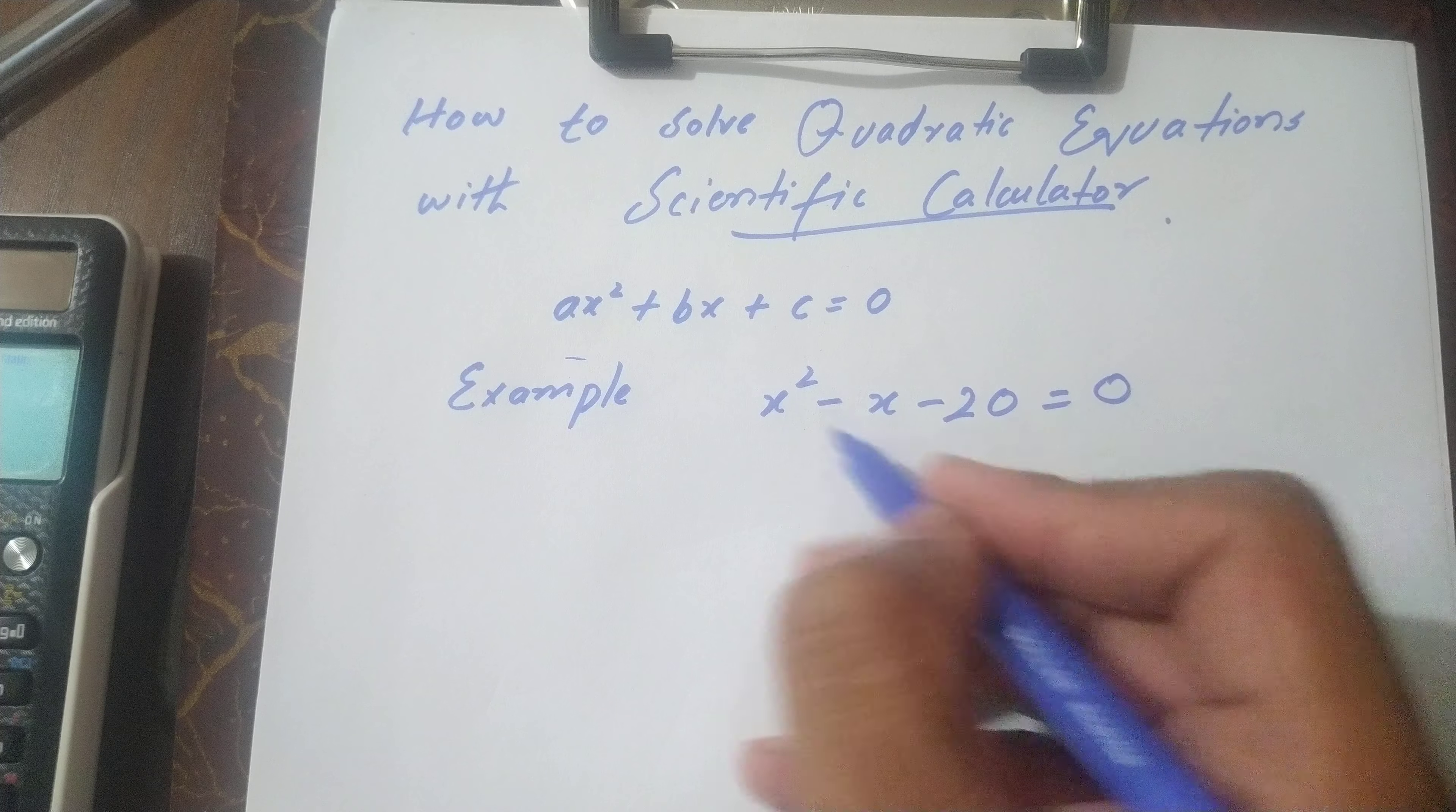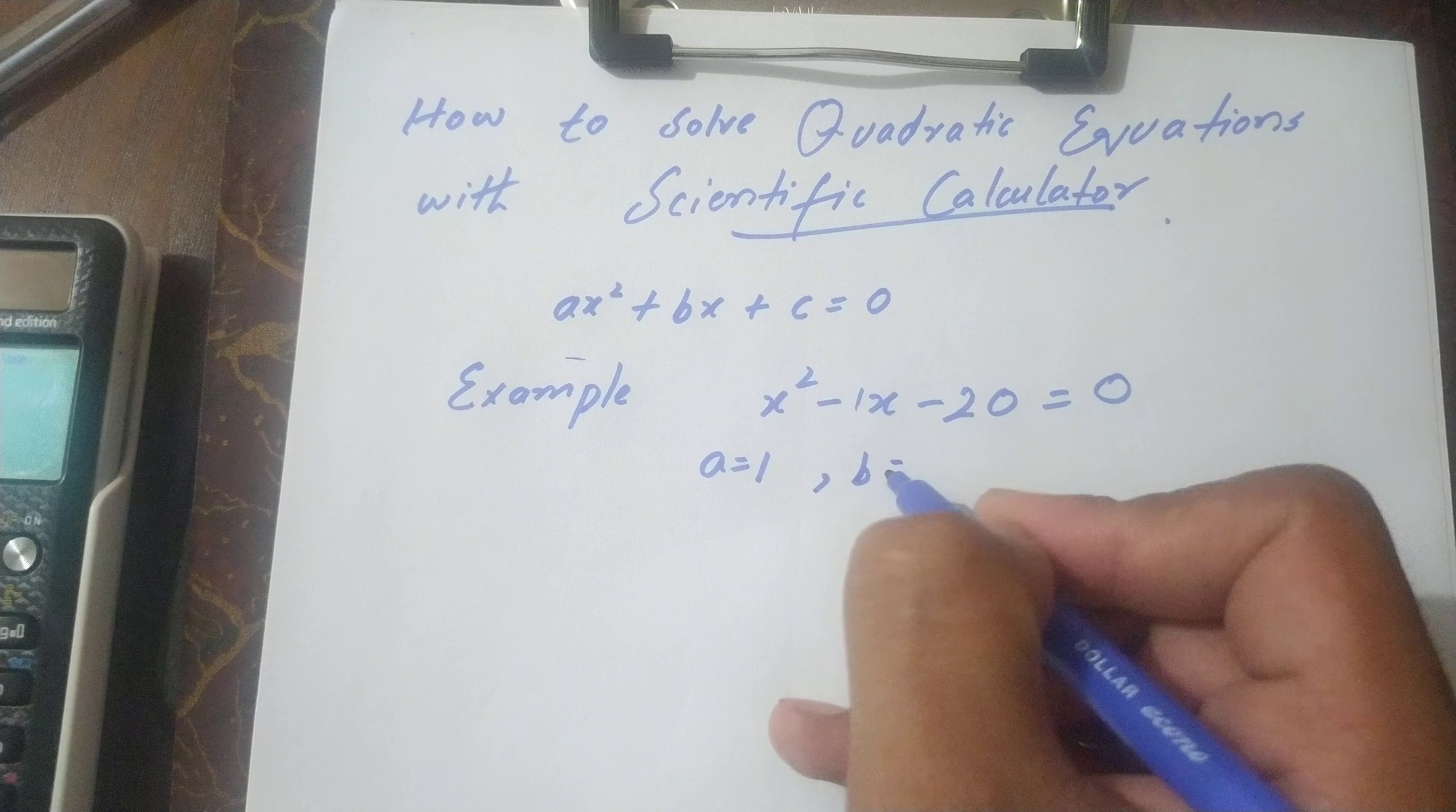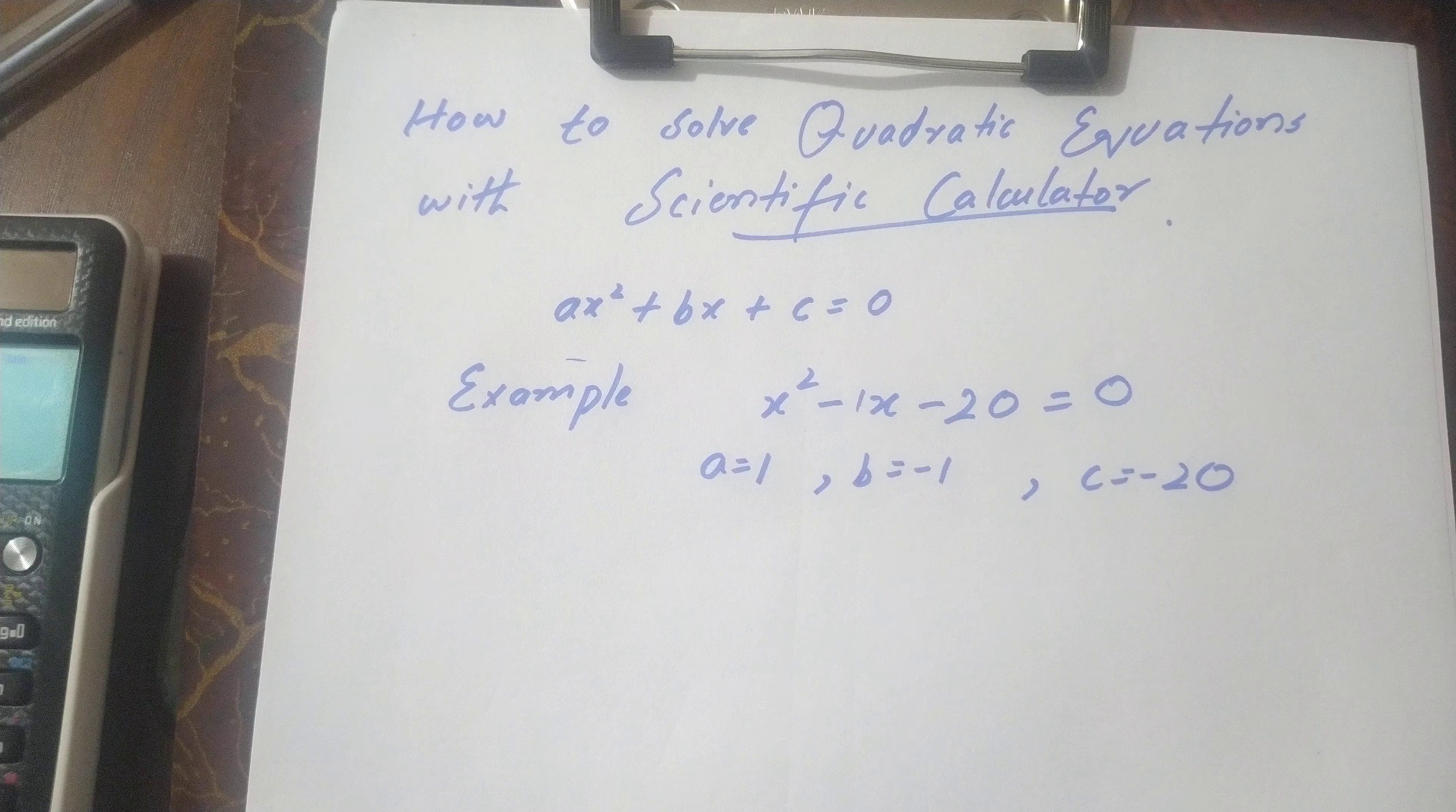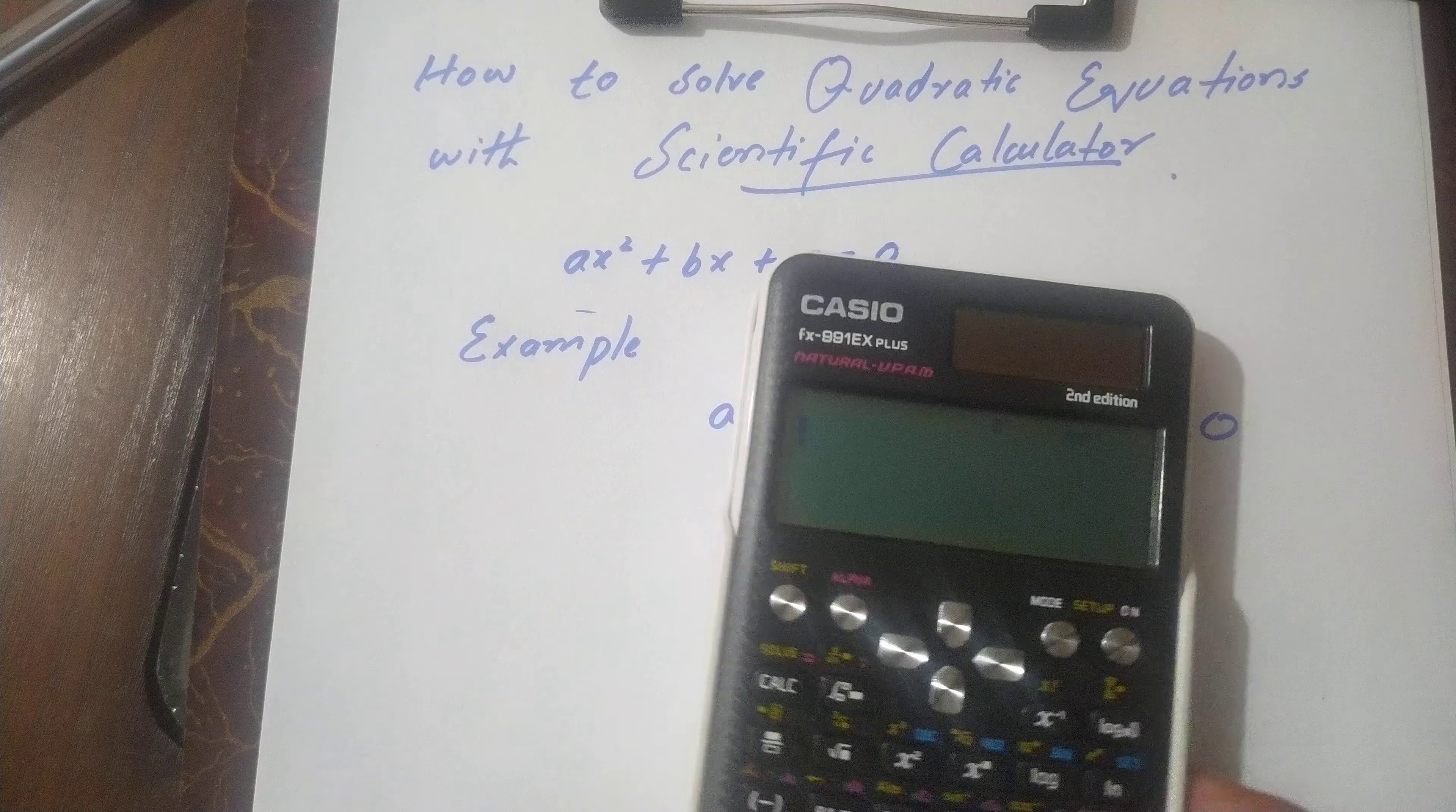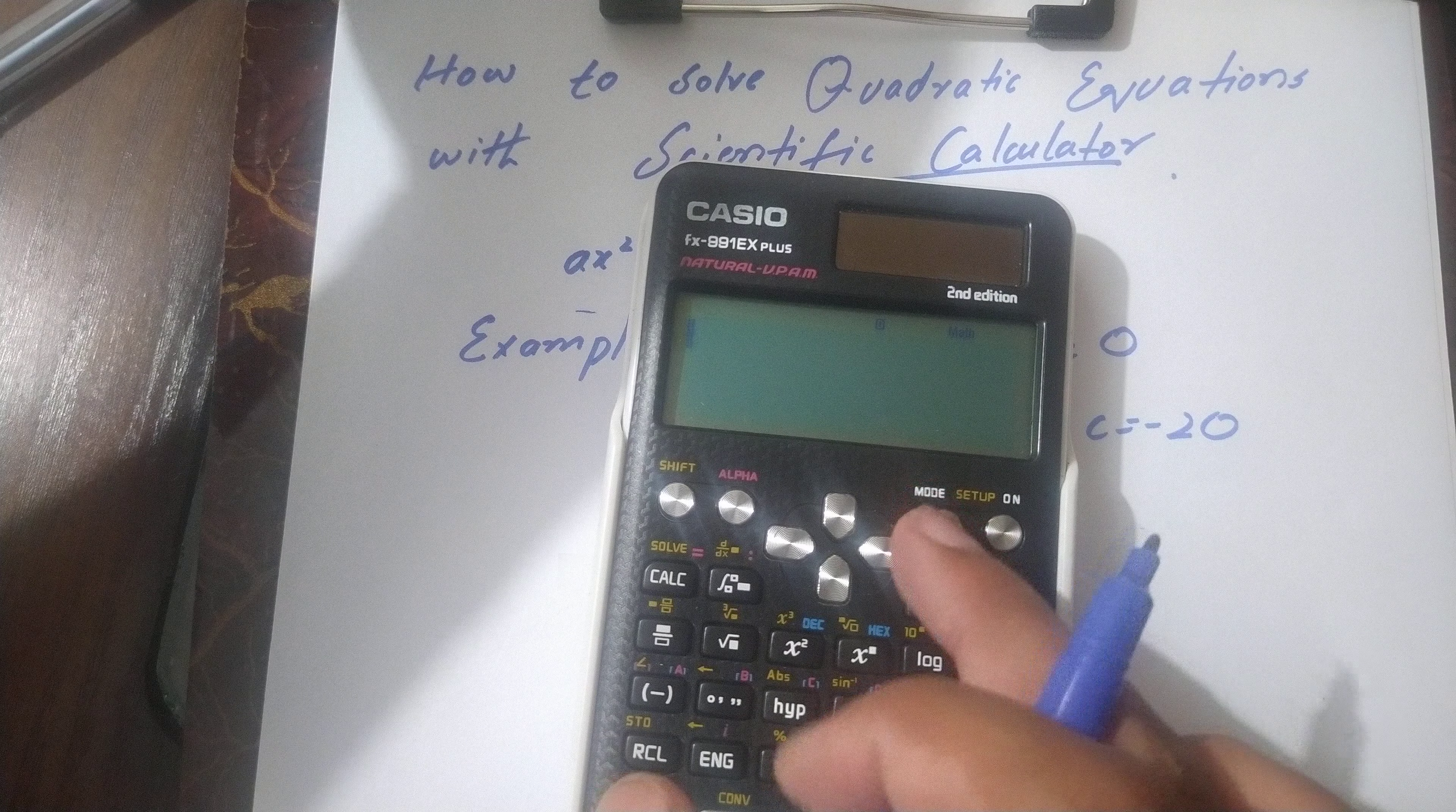So if you compare, a is 1, b is minus 1, and c is minus 20. You need a standard scientific calculator.